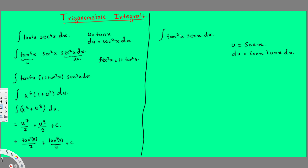Since we have tan³x, I can separate the power into two parts: tan²x · tan x · sec x dx. Notice that tan x · sec x dx is exactly du, but we still have tan²x left which we can't directly substitute since u = sec x. We need to bring it into sec x form.